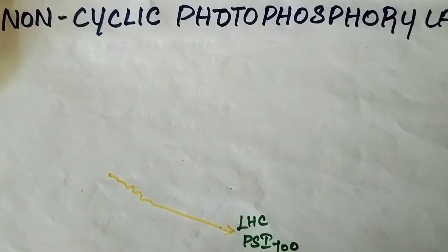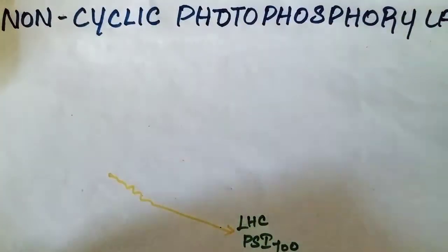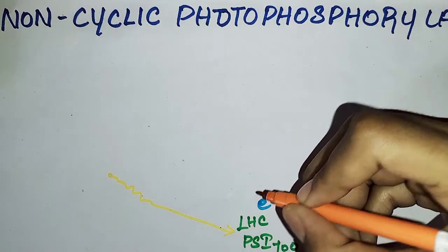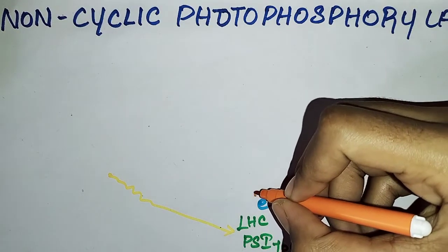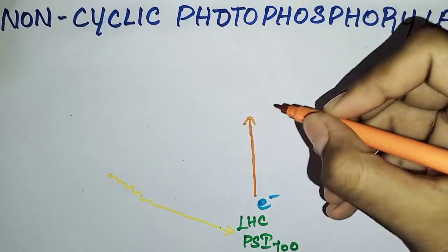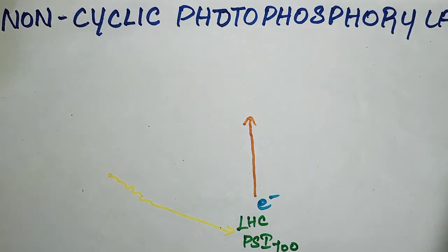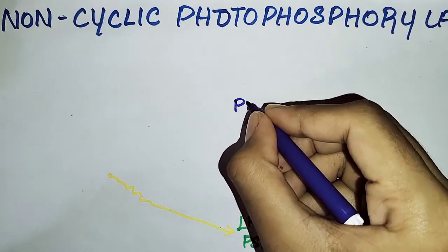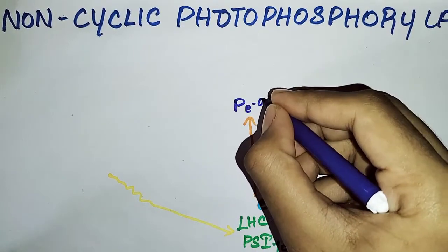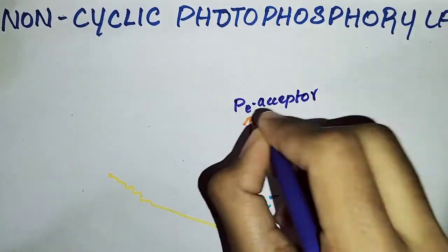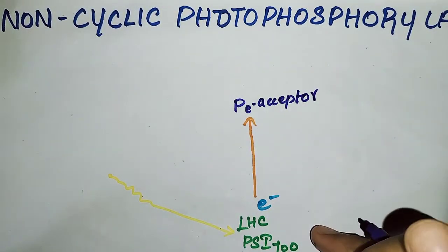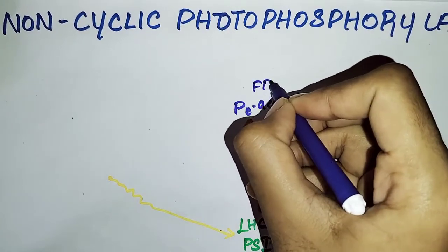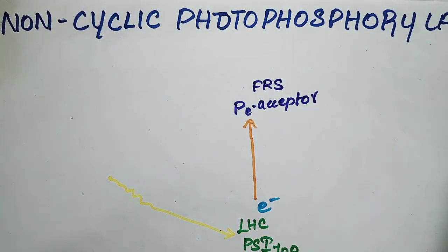They are now easily able to move out from their own atom. So now the electron is excited from P700. This electron goes to the primary electron acceptor. What is this which accepts the electron from PS1? It is FRS — ferredoxin reducing substrate.